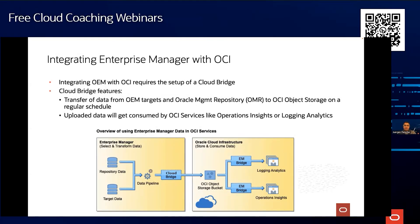My part today is to show how to connect Enterprise Manager with OCI. Usually Enterprise Manager is somewhere in your on-premise data center with firewalls around it, so we have to get data to OCI. We are talking about a cloud bridge here. In a traditional on-premise data center, you have different database hosts as target sources, and this data is transferred using the cloud bridge to OCI using object storage as the mechanism.